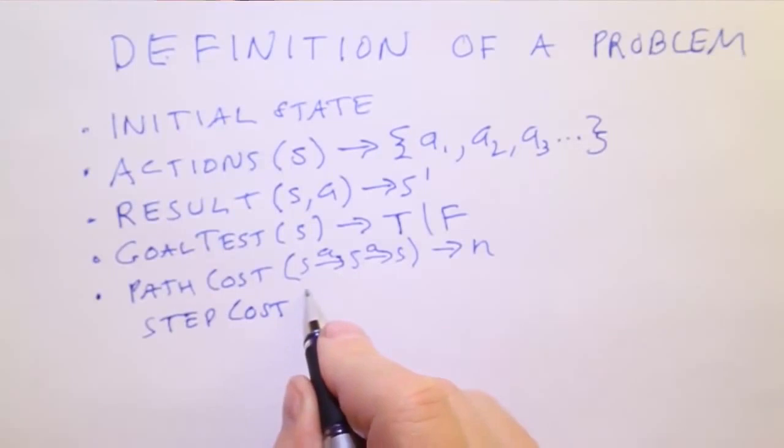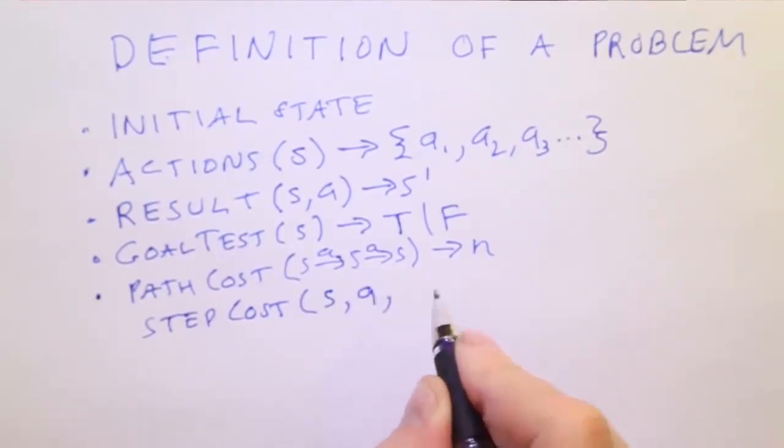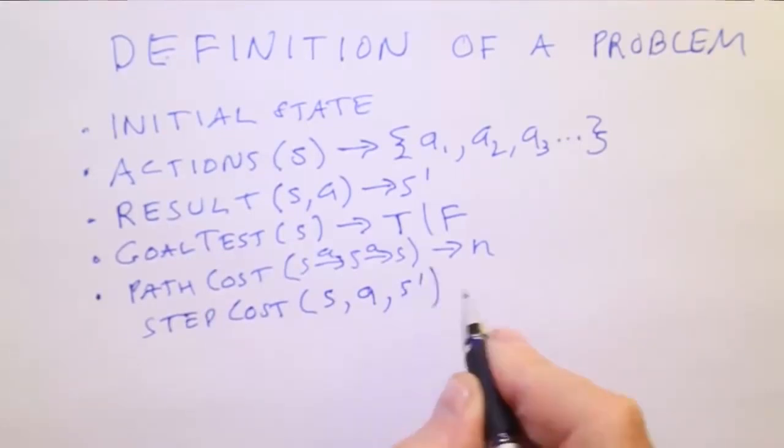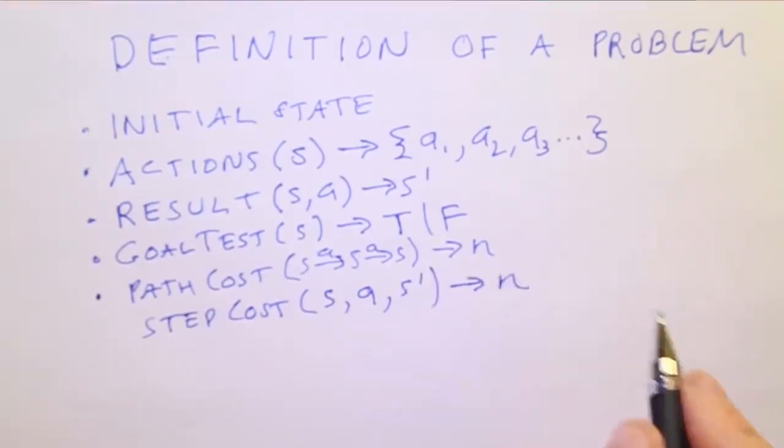The step cost function takes a state, an action, and the resulting state from that action, and returns a number n, which is the cost of that action. In the route finding example, the cost might be the number of miles traveled, or maybe the number of minutes it takes to get to that destination.